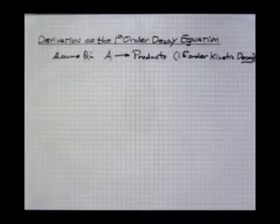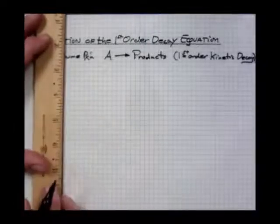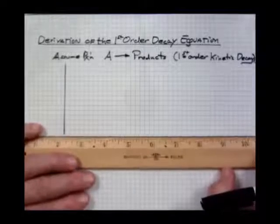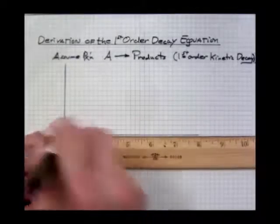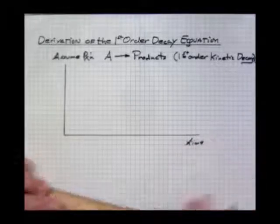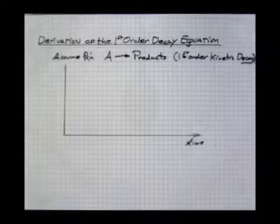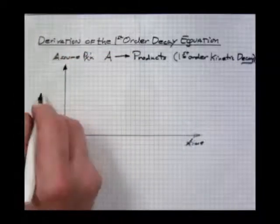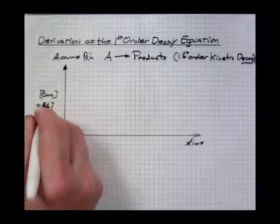Now the trend that we will be looking at will simply follow a decreasing concentration as a function of time. So we have molar concentration on this axis, which is of course molar concentration of A.